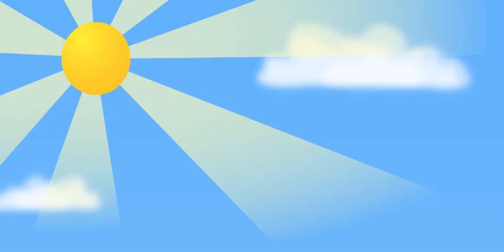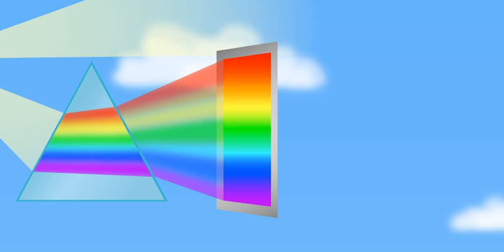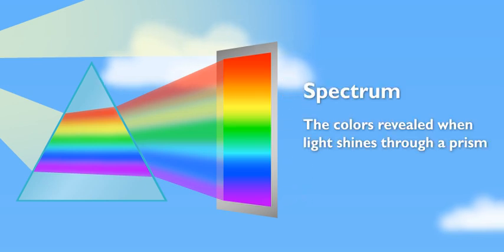How come we can't see them? We can, but we need a prism to do it. Sweet. The prism breaks up the light into seven colors called the light spectrum.